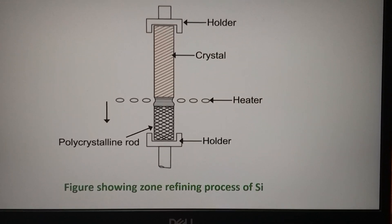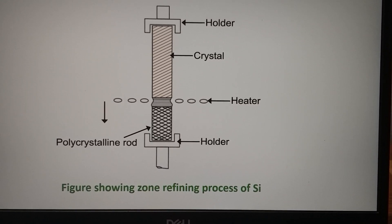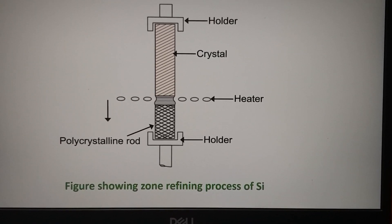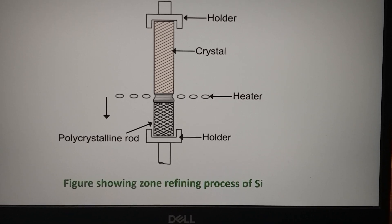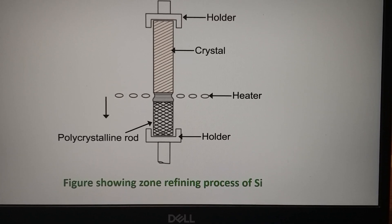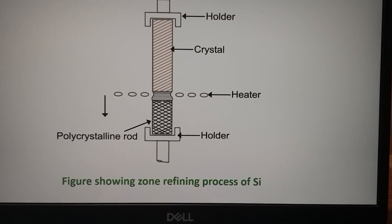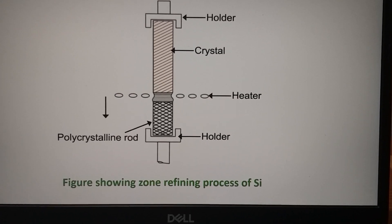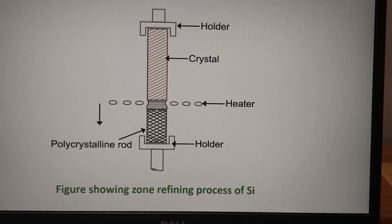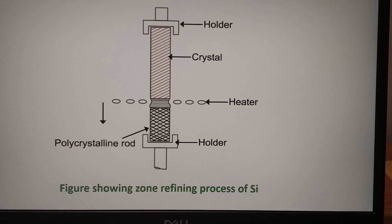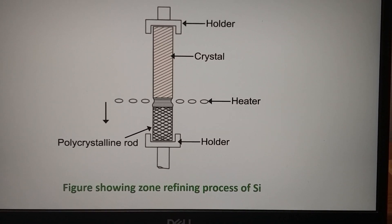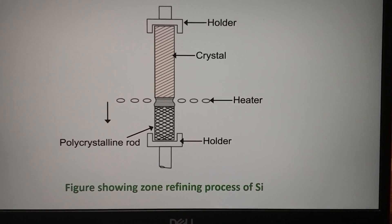This diagram shows the arrangement: how the impure silicon to be purified is clamped vertically on the stand. The holder is visible and the heater is slowly moved. The impurities come down along with the movement of the heater. The above portion is now purified and it is separated from the lowest portion by cutting it away from the pure silicon. This is how the zone refining process of silicon is performed to get a very superior quality solar-grade silicon.